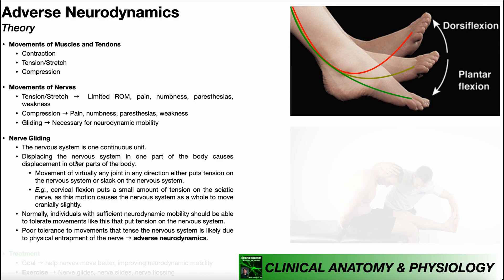This is evidenced by the fact that if you displace the nervous system in one part of the body, it causes displacement in other parts of the body. Movement of virtually any joint in any direction either puts tension on or slack on the nervous system. For example, cervical flexion — bending the neck downward — puts a small amount of tension on the sciatic nerve. When you do cervical flexion, it puts tension on the spinal cord; following the spinal cord down to the nerve roots of the cauda equina, those form the sciatic nerve. So putting tension at the top of the spinal cord puts tension on the whole cord, the cauda equina, and therefore the sciatic nerve.